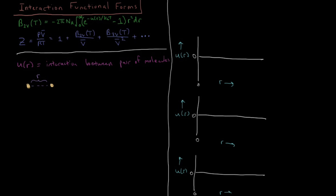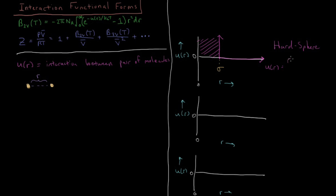The first one we want to look at is called the hard sphere. For the hard sphere, it sounds pretty much like what it is: at short range you're going to have an interaction which is infinite, so the molecules cannot get closer than this given distance. Beyond that distance their interaction is zero. This distance of interest is called sigma. So U(R) equals infinity at R less than sigma, and zero otherwise for R greater than or equal to sigma.